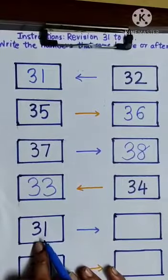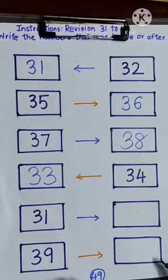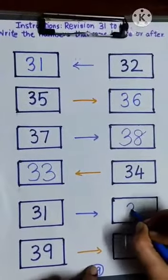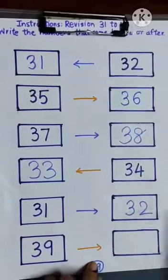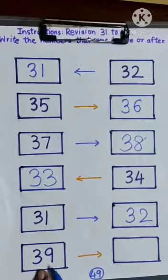Which number will come after 31? The answer is 32, 32. And our last question.